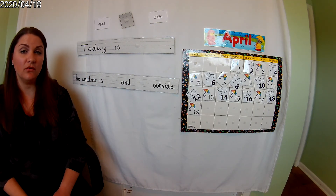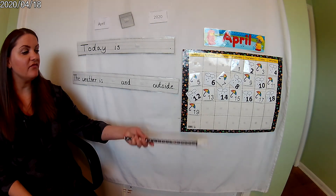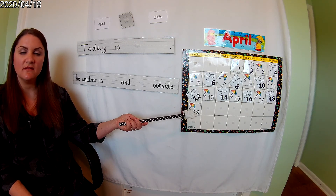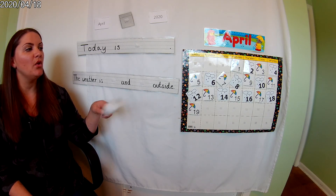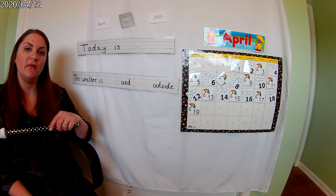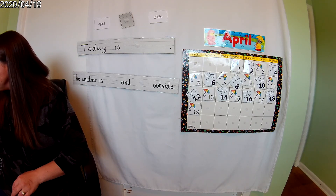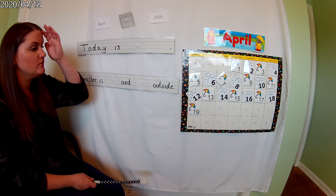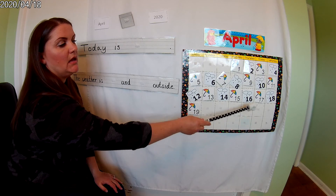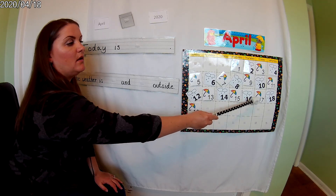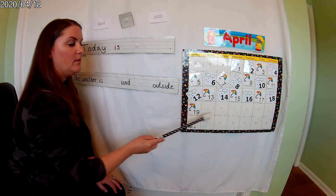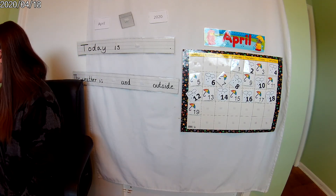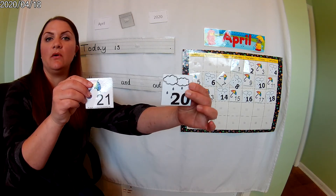I know that you guys would tell me, if we were in school, that we have to look at our calendar to figure out what the date is. So let's look at our calendar and look at the pattern — you help me with our pattern. Our pattern goes: umbrella, clouds, umbrella, clouds. Umbrella — hmm, what comes next? Umbrella again, or clouds? Clouds.